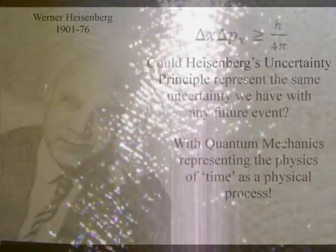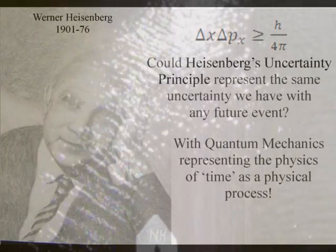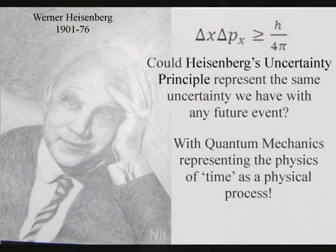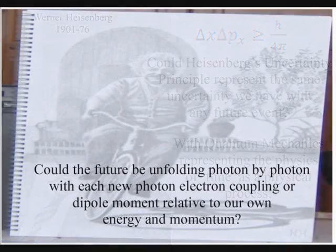The second postulate is that at the smallest scale of this process, Heisenberg's uncertainty principle that is formed by the wave function is the same uncertainty we have with any future event.